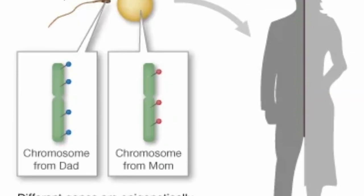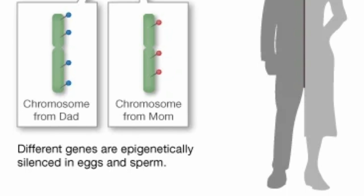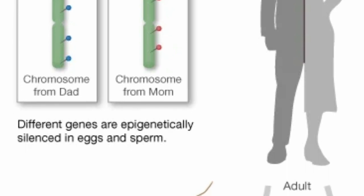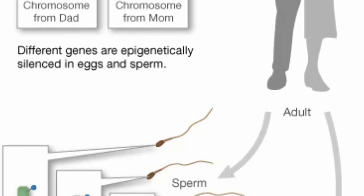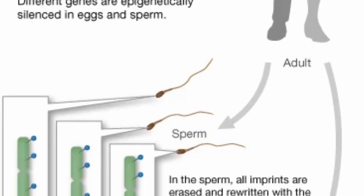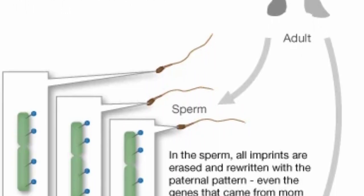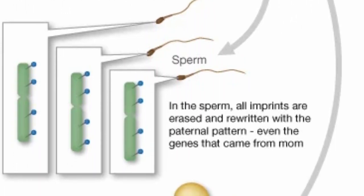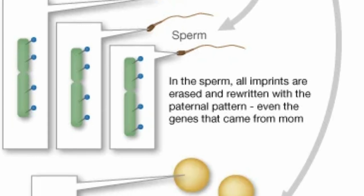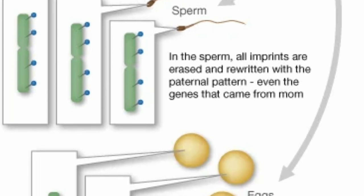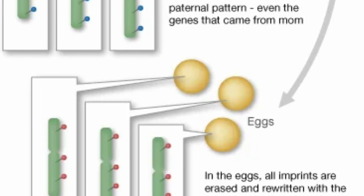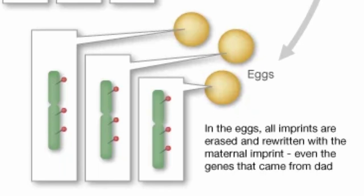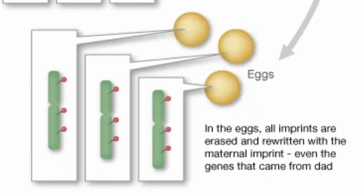Genomic imprinting is an epigenetic phenomenon in which certain genes are expressed in a parent-of-origin specific manner. This means that the expression of imprinted genes is determined by whether the gene is inherited from the mother or the father. The genetic information from one parent imprints and marks the gene in a way that influences its expression.